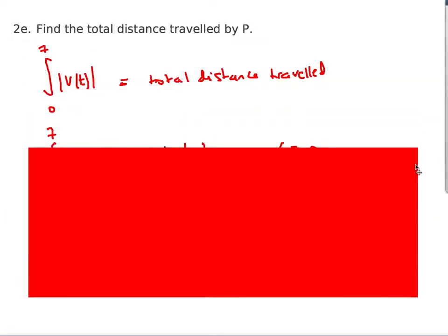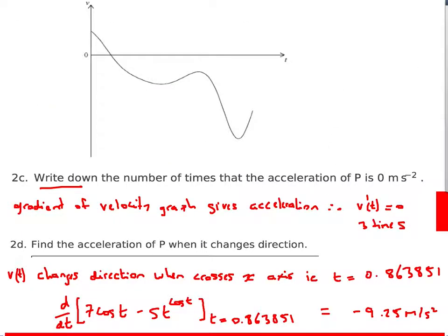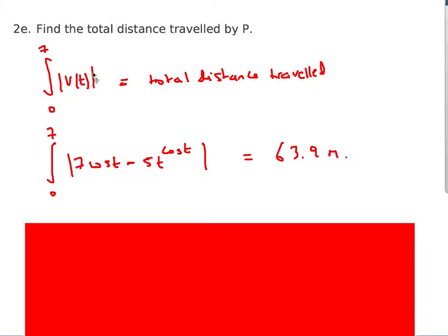Total distance travelled: using our definition, we integrate the absolute value of the velocity over the first seven seconds — from 0 to 7. Enter the absolute value of the function into the calculator between 0 and 7, and the answer is 63.9 metres. All of this is really just about knowing how to use your calculator correctly.